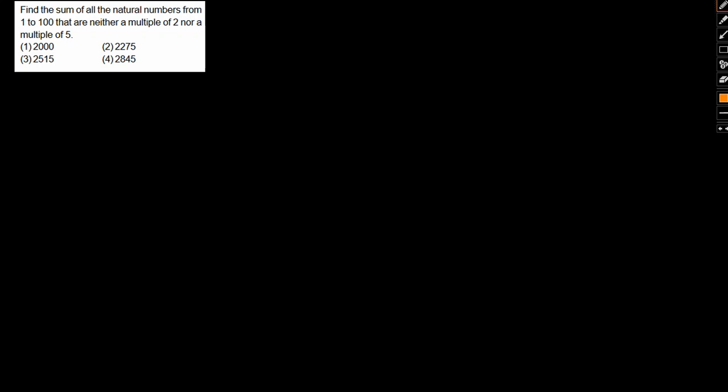We'll be focusing on a question from the paper itself and then subsequently understand the approach so that whenever we come across questions such as this, we are easily able to solve them. The question is: Find the sum of all natural numbers from 1 to 100 that are neither multiples of 2 nor 5. The range is 1 to 100.